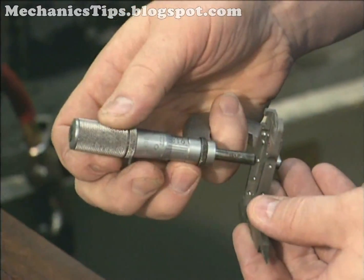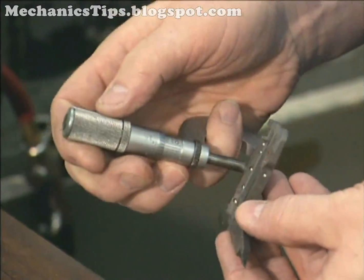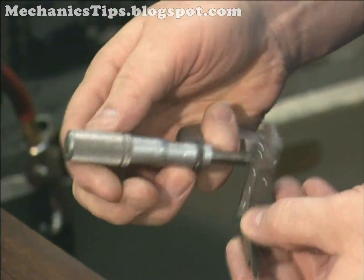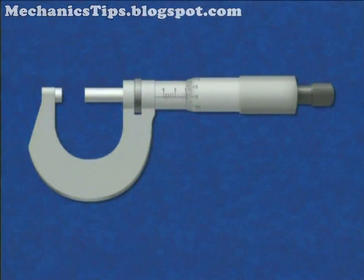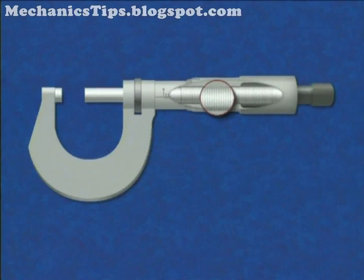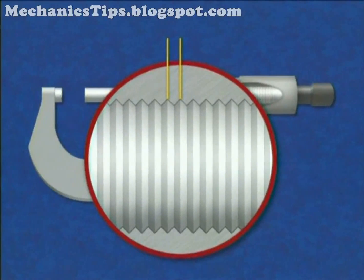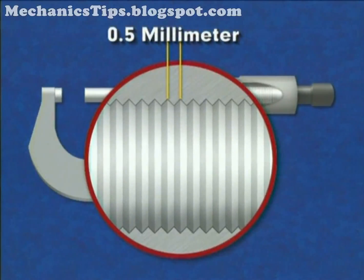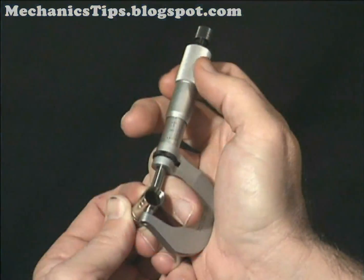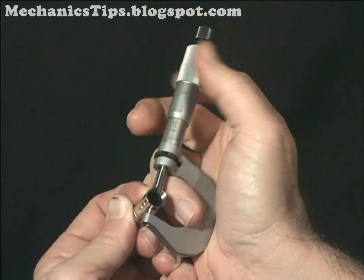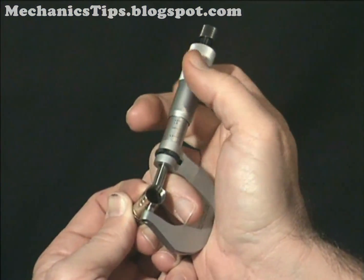Micrometers are produced in various precisions, both in metric and English units. In every case, it is the thread pitch of the spindle screw that makes each type different. The thread pitch is the distance between two adjacent thread crests. In this example, the thread pitch of the micrometer spindle screw is precisely one-half millimeter. Each revolution of the thimble moves the micrometer spindle one-half millimeter.